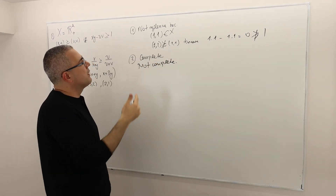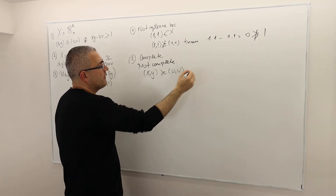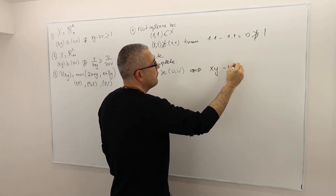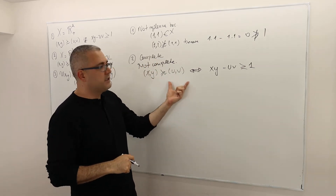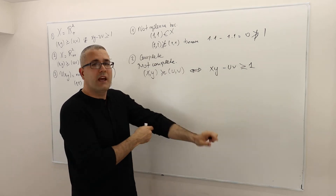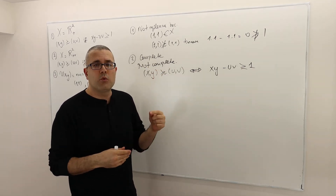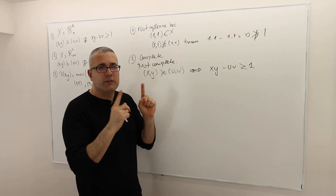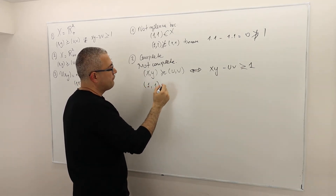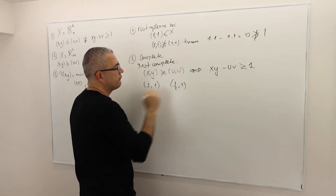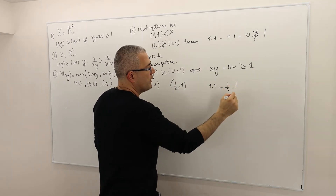My intuition is the following: it has to be that (x, y) is at least as good as (u, v), which is equivalent to saying x·y minus u·v is greater than or equal to 1. For completeness, it means (x, y) is at least as good as (u, v) or (u, v) is at least as good as (x, y). So the difference between the multiplications of these two vectors should be greater than 1. But what if the absolute value is not greater than one? For example, let's suppose (x, y) = (1, 1) and (u, v) = (½, 1). In that case, x·y minus u·v equals 1 minus ½, which equals ½.